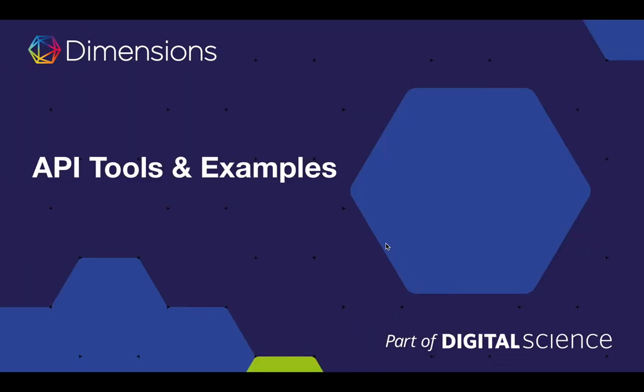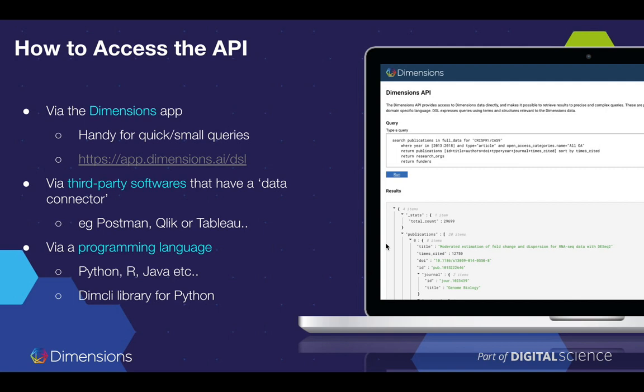In the second part of this presentation, I'll be looking at the tools and tutorials we have online that make it easier to get going with and become productive with the Dimensions API. First of all, the easiest way to interact with the API is via the Dimensions web application. The UI has a page normally located at app.dimensions.ai/dsl, where you'll find a query search box where you can put in a DSL query string and the results will come back at the bottom in JSON format.